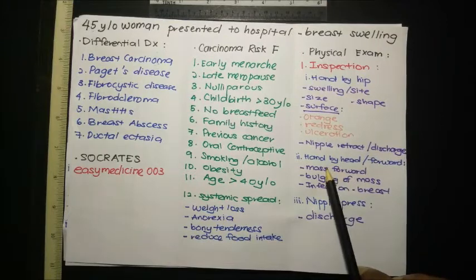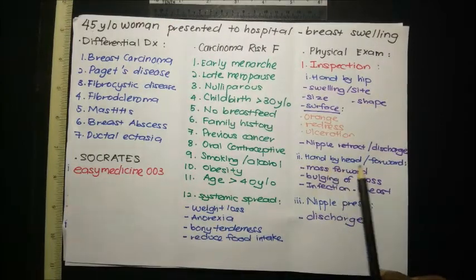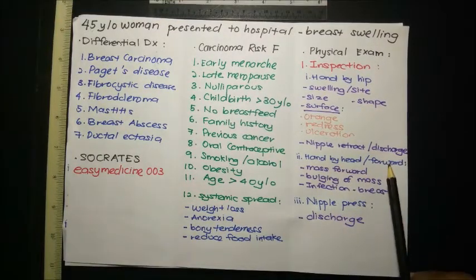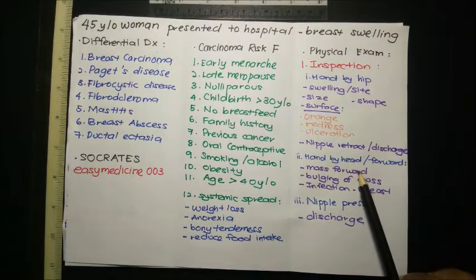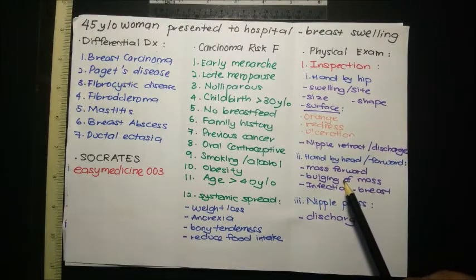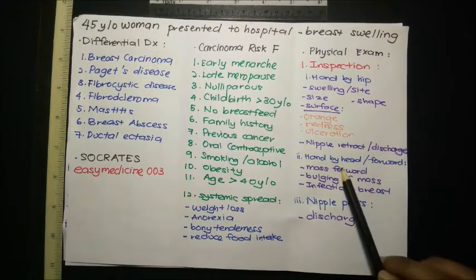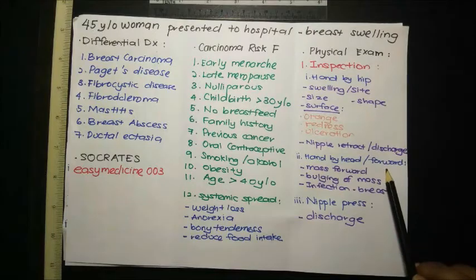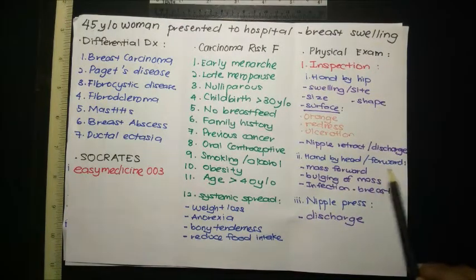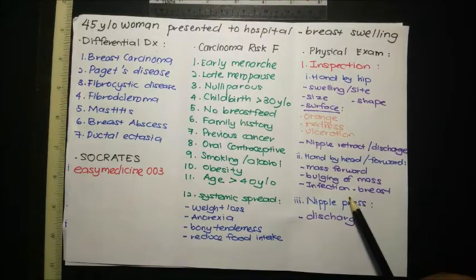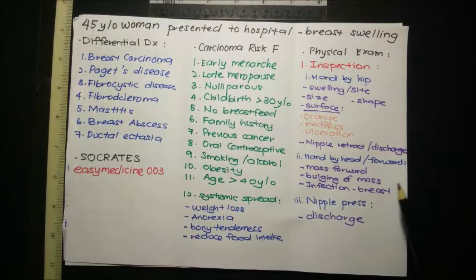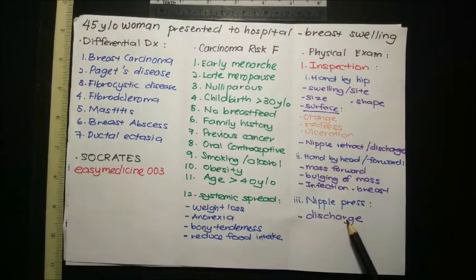Ask the patient to place their hands on their head and lean forward. In this position there is maximum contraction of the breast, so any puckering becomes more prominent. As the breast comes forward, any mass becomes more visible — this is a positive sign. We also need to check underneath the breast for any infection.